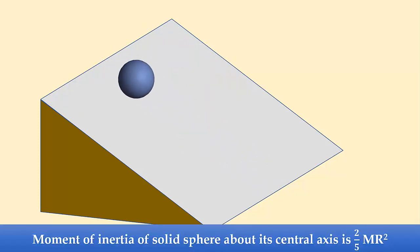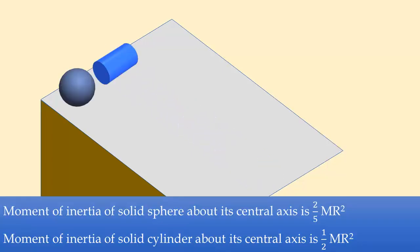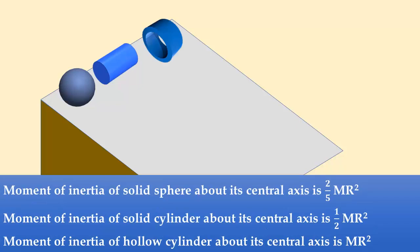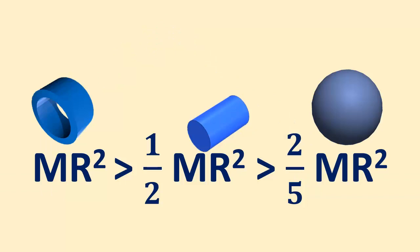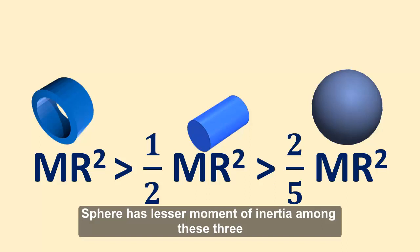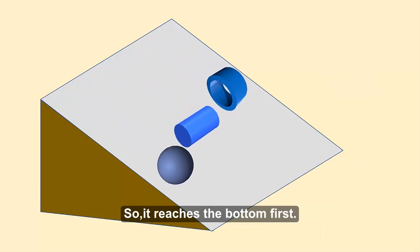Now looking back at our initial problem: the moment of inertia of a solid sphere about its central axis is (2/5)mr²; the moment of inertia of a solid cylinder about its central axis is (1/2)mr²; and the moment of inertia of a hollow cylinder about its central axis is mr². If mass is the same in all three cases, mr² > (1/2)mr² > (2/5)mr². The sphere has the least moment of inertia among these three, so it reaches the bottom first.